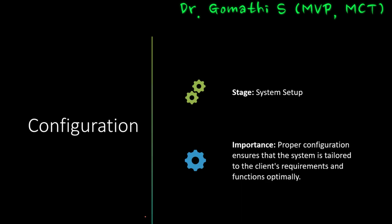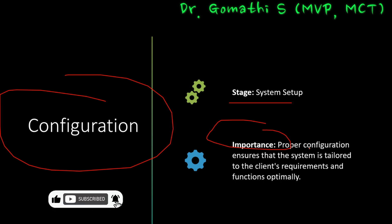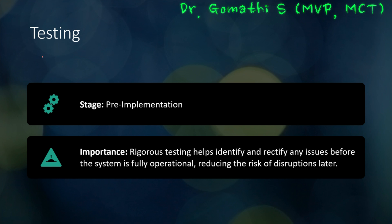The next stage is configuration, which is the system setup stage. Proper configuration is the bridge between a system's capabilities and the client's needs. We take the gathered requirements and turn them into reality — adjusting settings, customizing the interface, and optimizing workflows to mirror the client's operations. The accuracy of configuration is pivotal; it ensures that the system's functionalities align perfectly with the client's vision, minimizing friction and maximizing effectiveness in achieving their business goals.